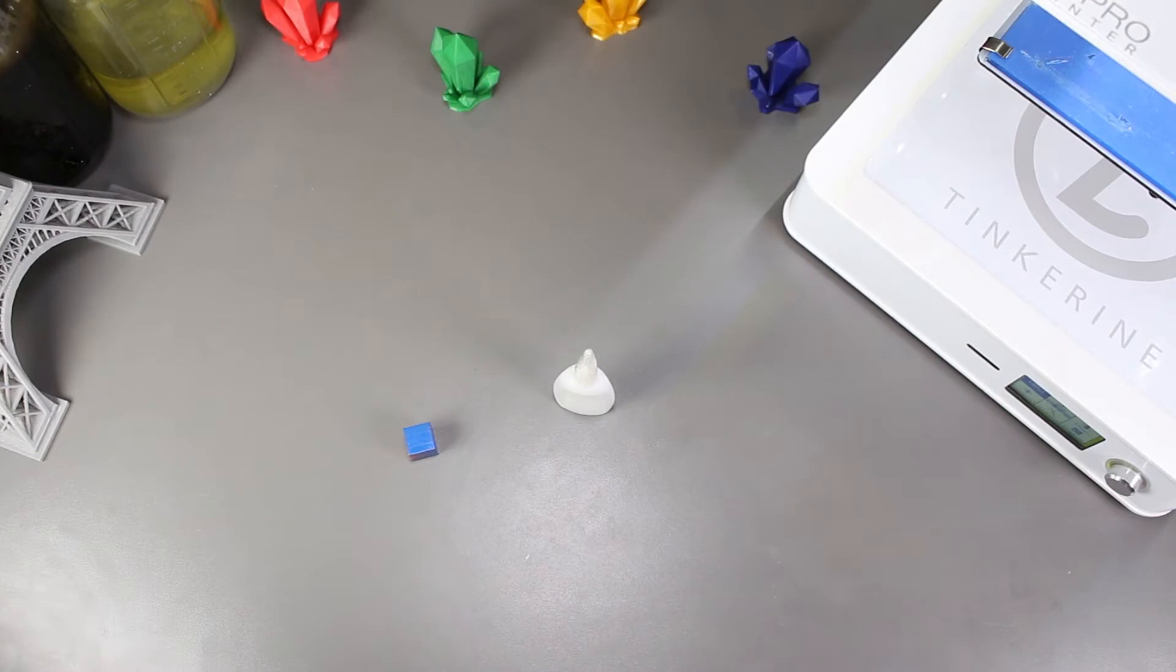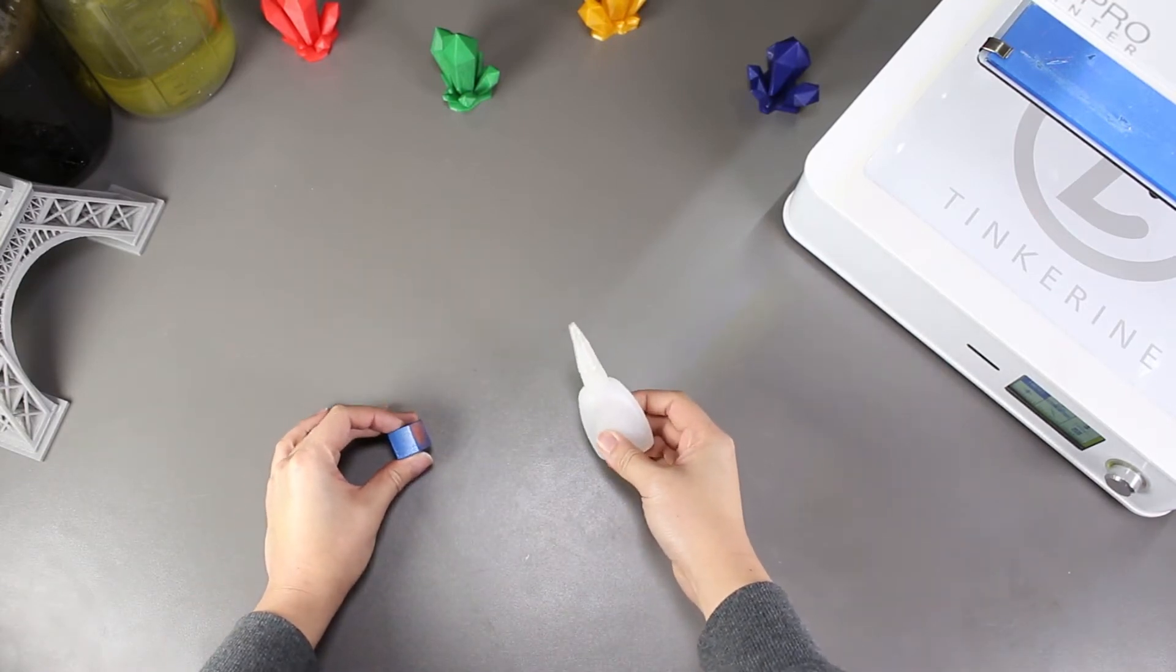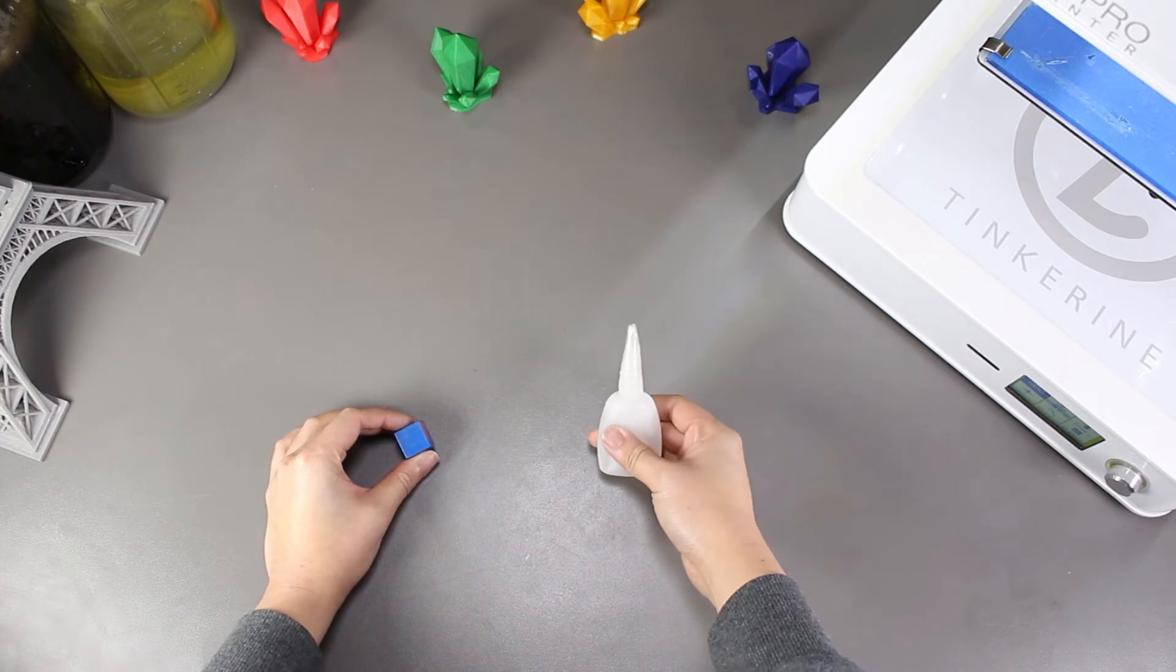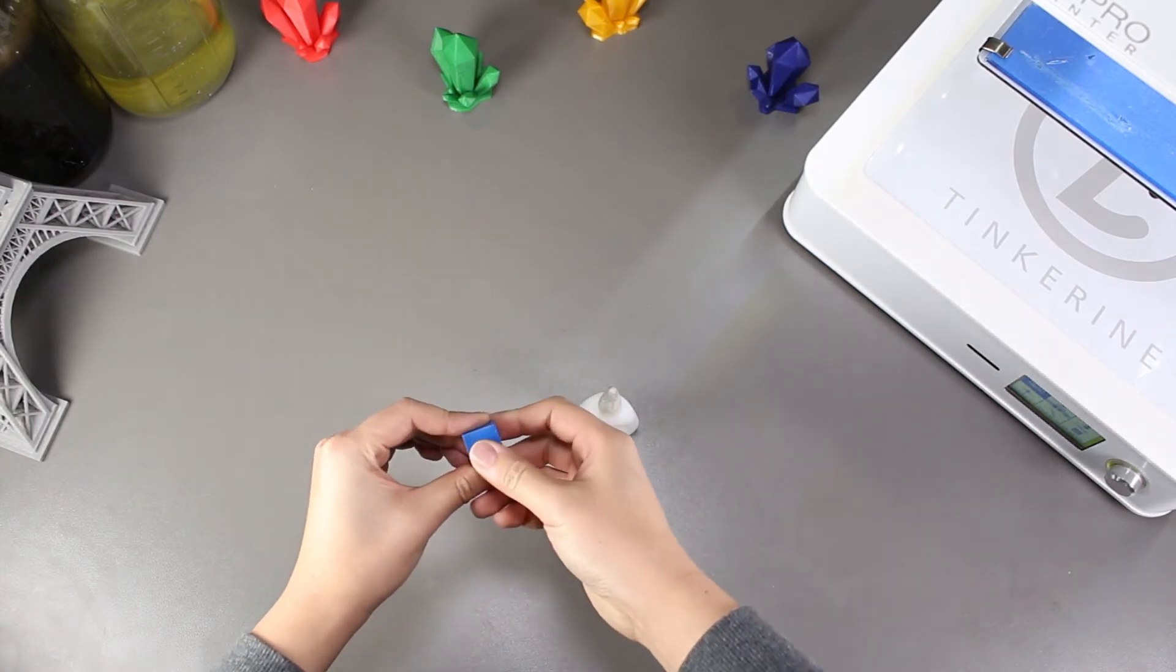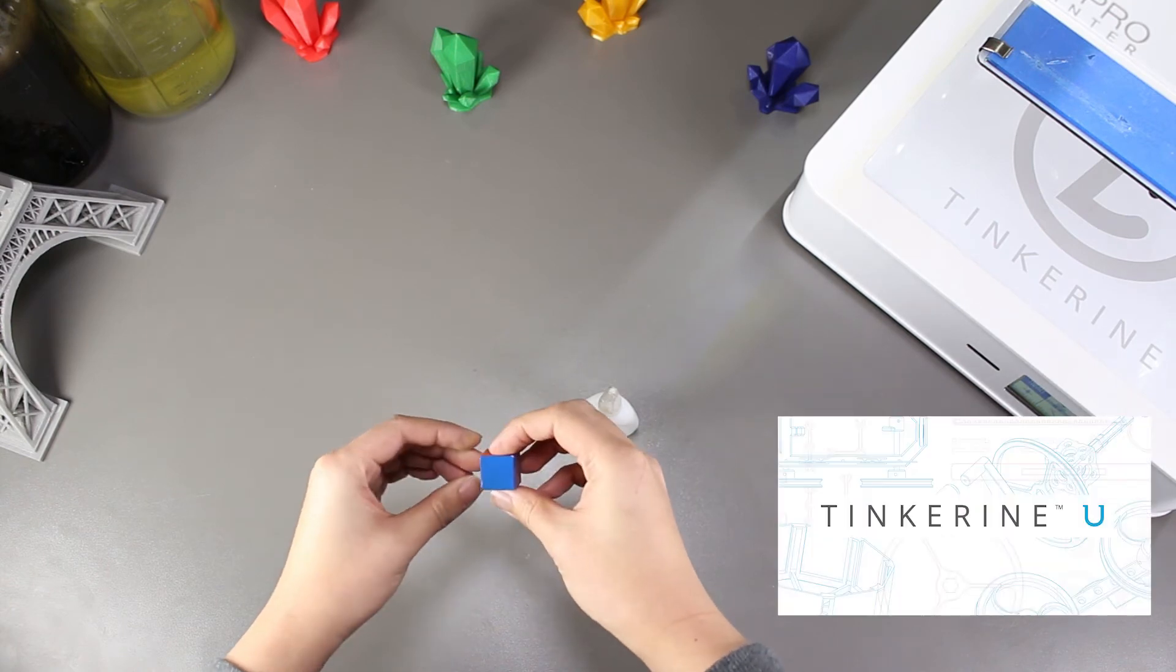Well there we have it. We tried using superglue to post-process our 3D printed PLA parts and I must say it works really well. It's a simple and fast method, so for people that don't have a lot of time, you can try this out.